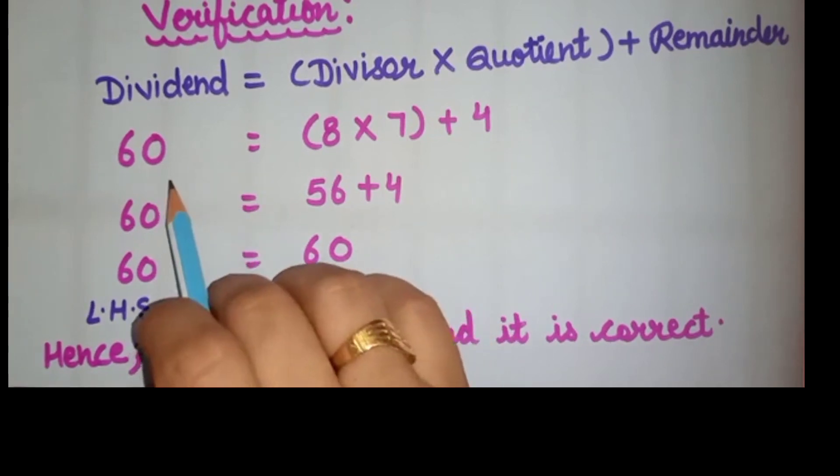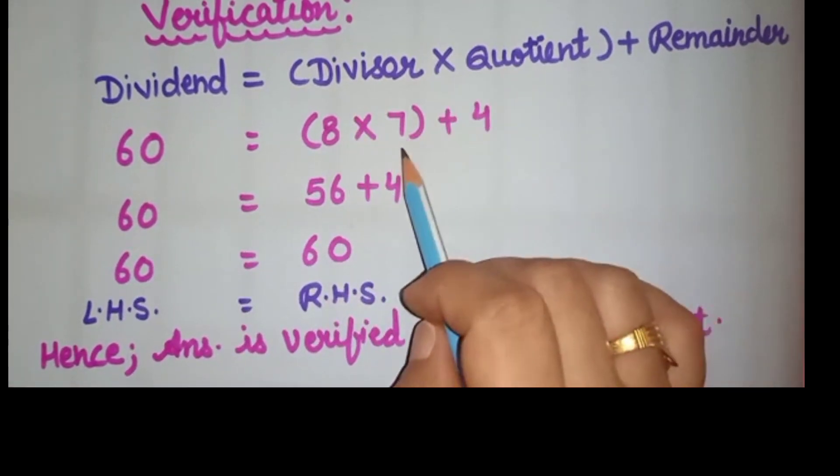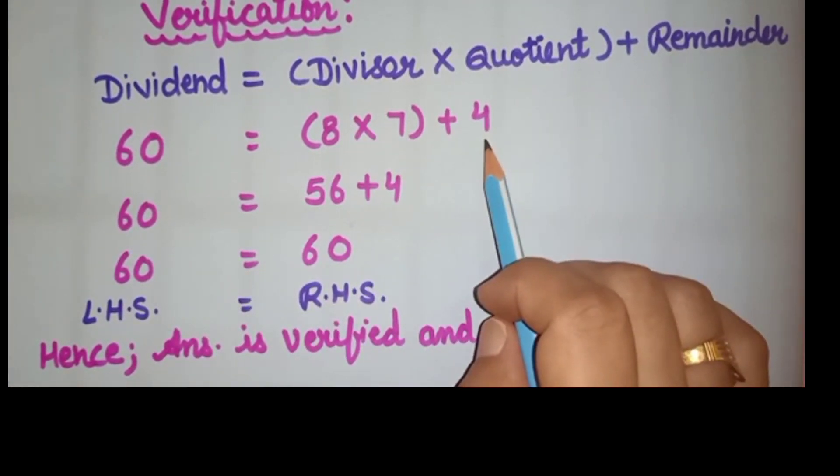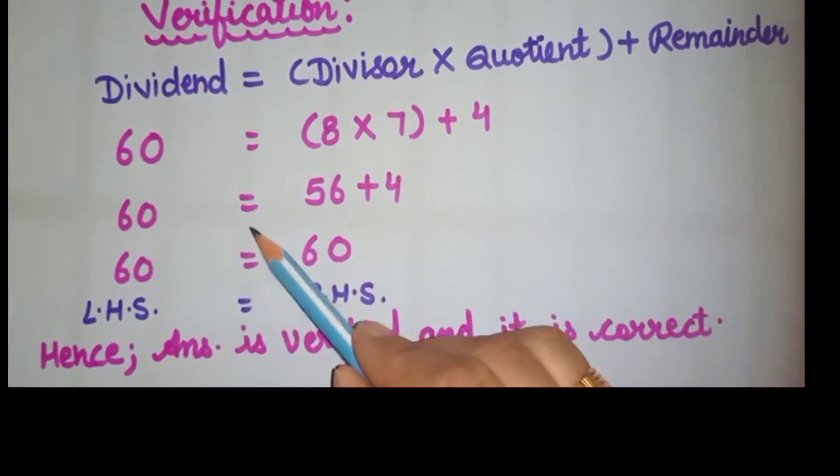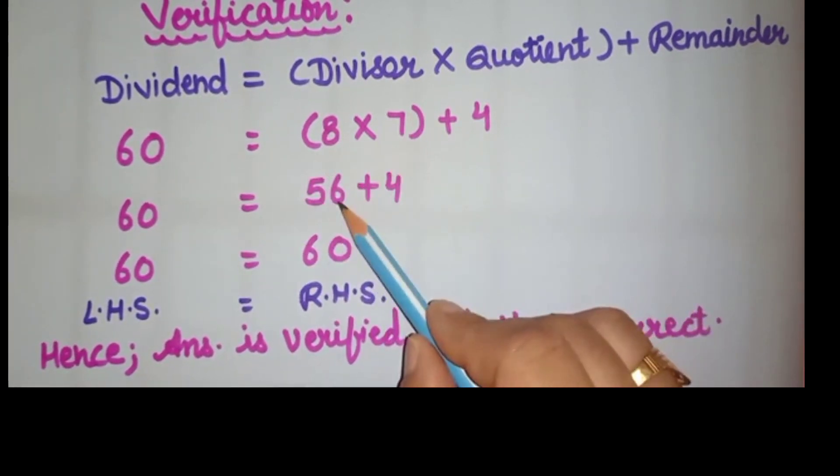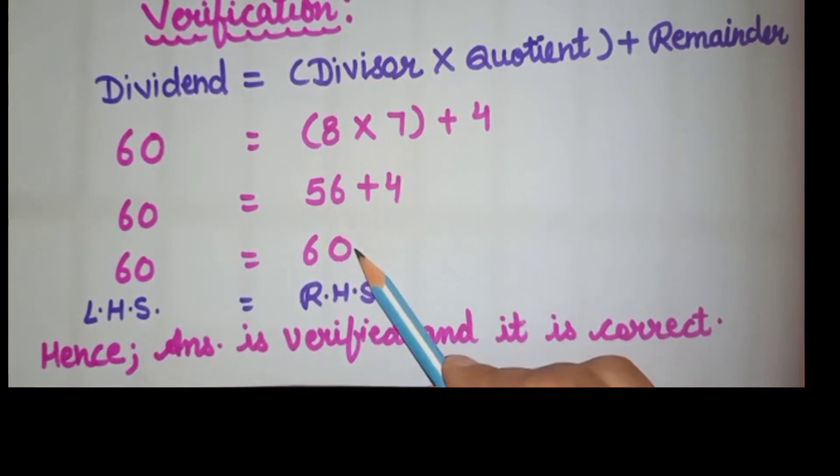After putting values in the formula, dividend is 60, divisor 8, quotient 7 and the remainder is 4. Now let's simplify this. 60 is equal to 8 times 7, which is 56, plus 4. 60 is equal to 56 plus 4, 60.